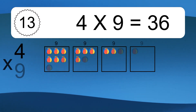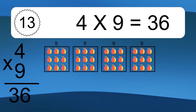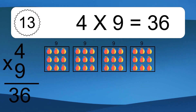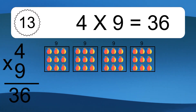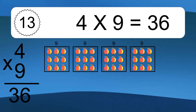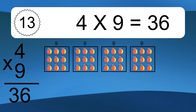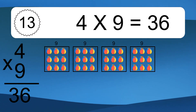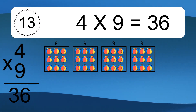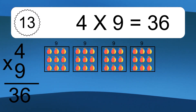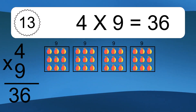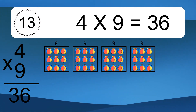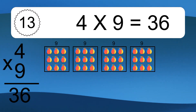4 times 9 equals 36. We have 4 boxes, and each box has 9 colorful balls inside. If you count all the balls in all the boxes together, you will have 4 times 9 balls. This equals 36 balls.